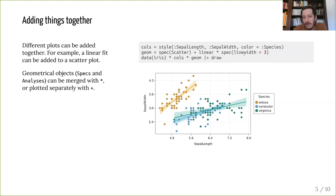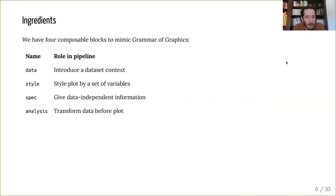To sum up the overall design of this strategy, we have four key ingredients. The data for the data set, the style on how to associate variables to plot variables, the spec to give data-independent details, and the analysis to transform data before you plot it. And then with the product, you form a specification, which, as far as I understand, in classical grammar of graphics, you would call a layer.